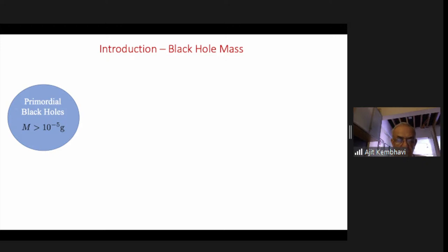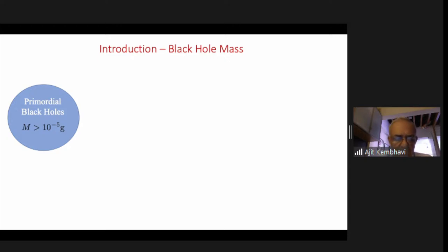Mini black holes were first talked about by Stephen Hawking, and that involved the dramatic combination of general relativity, quantum mechanics, and the laws of thermodynamics. The laws of thermodynamics had been discussed in the black hole context before Hawking's time by Bekenstein, where the laws of black hole dynamics were put in a form which made them very similar to the laws of thermodynamics.